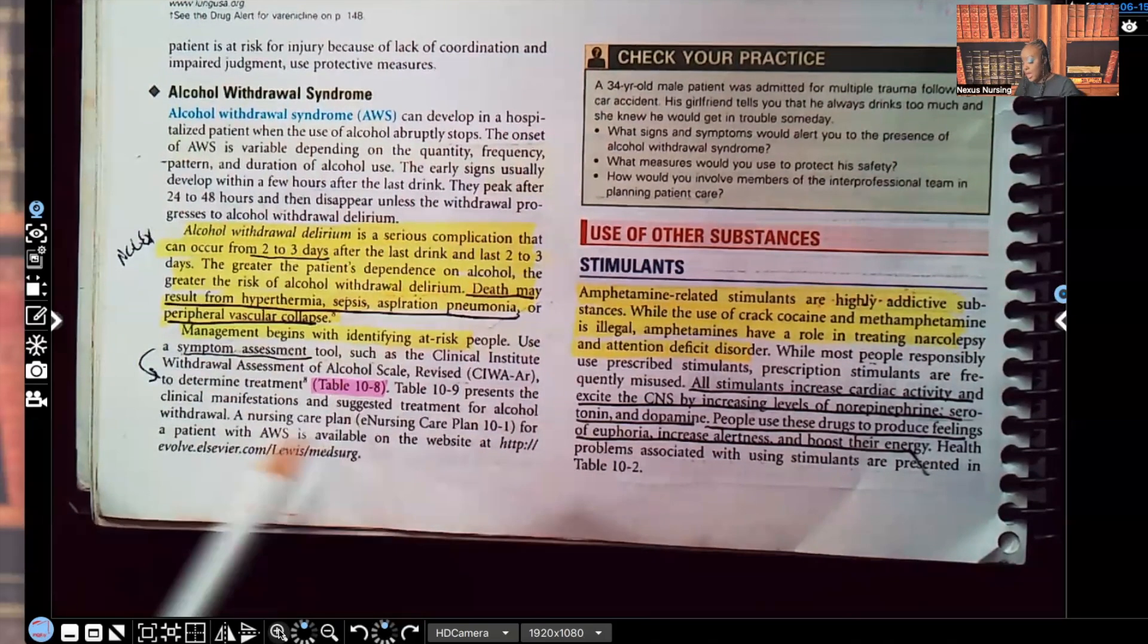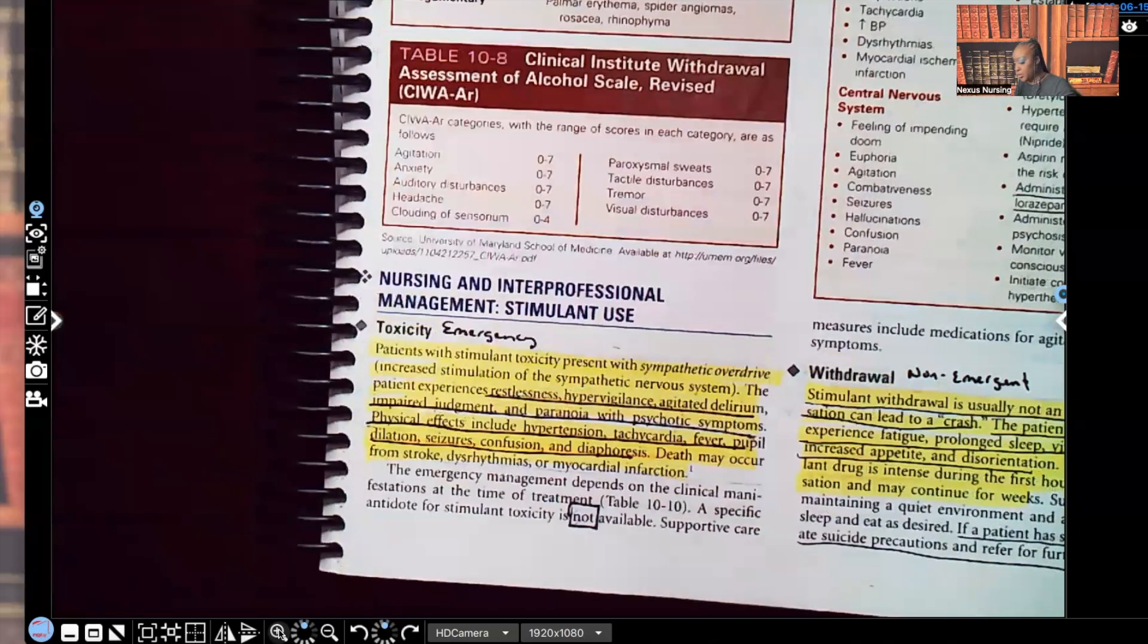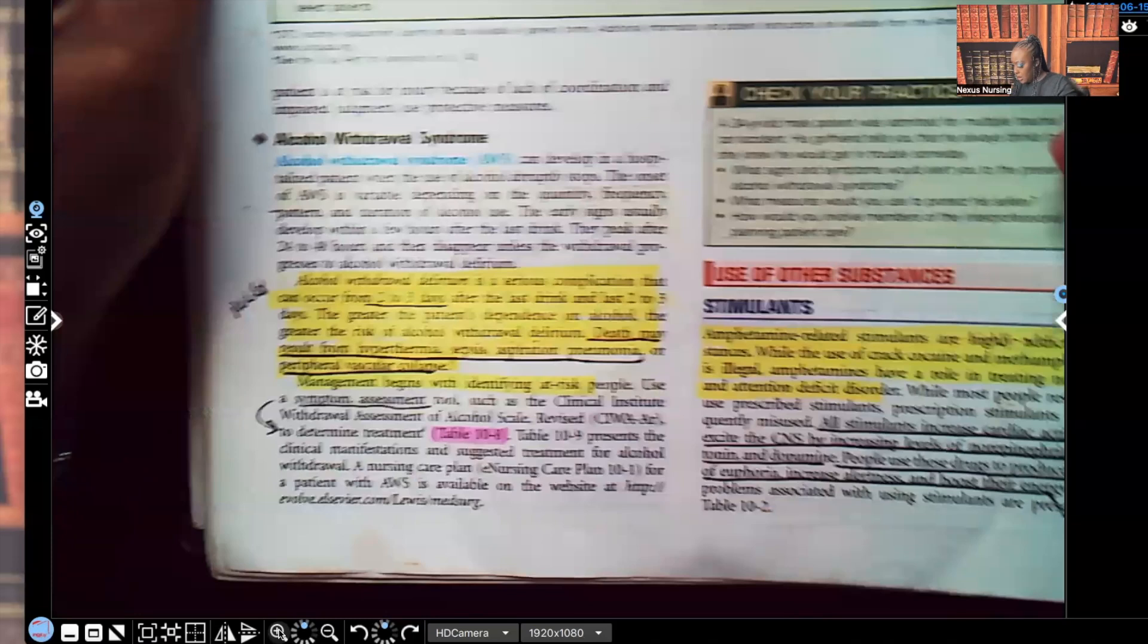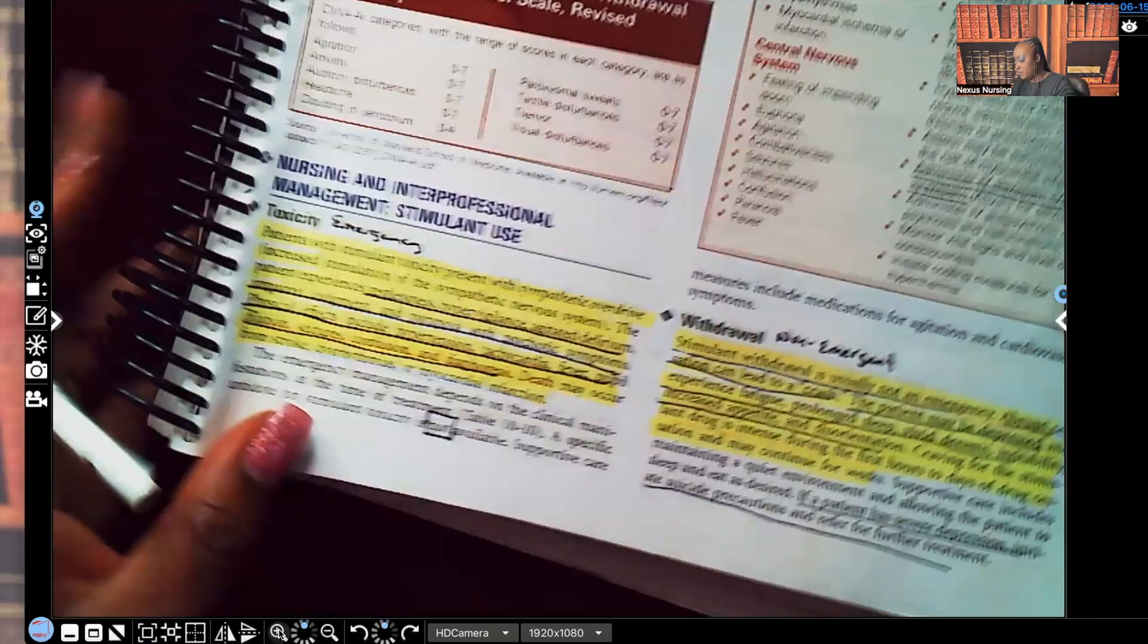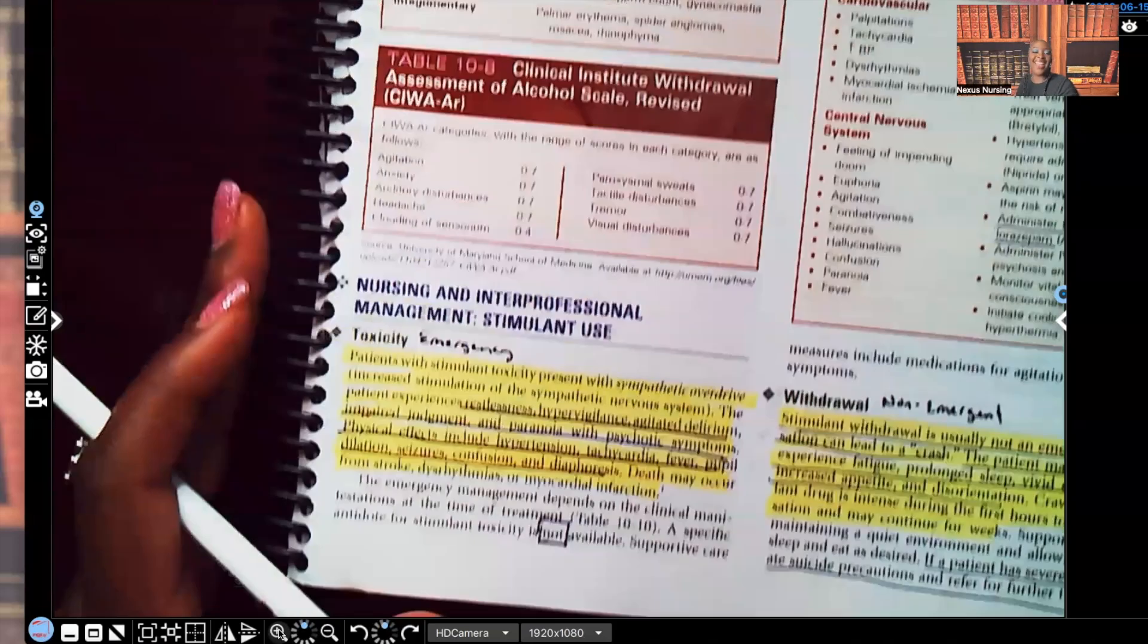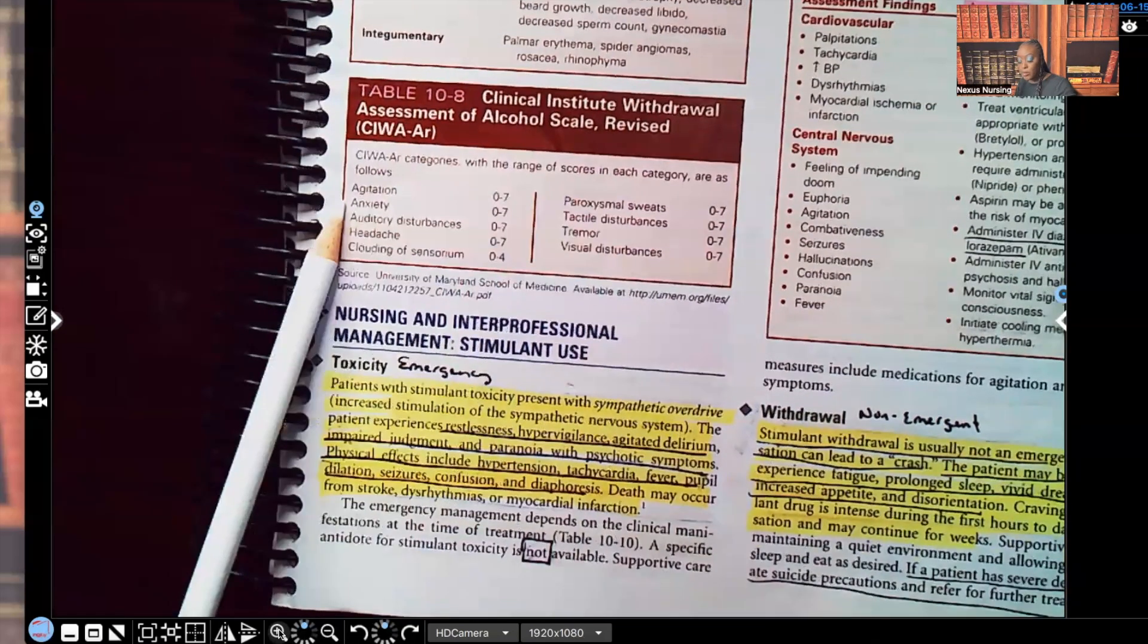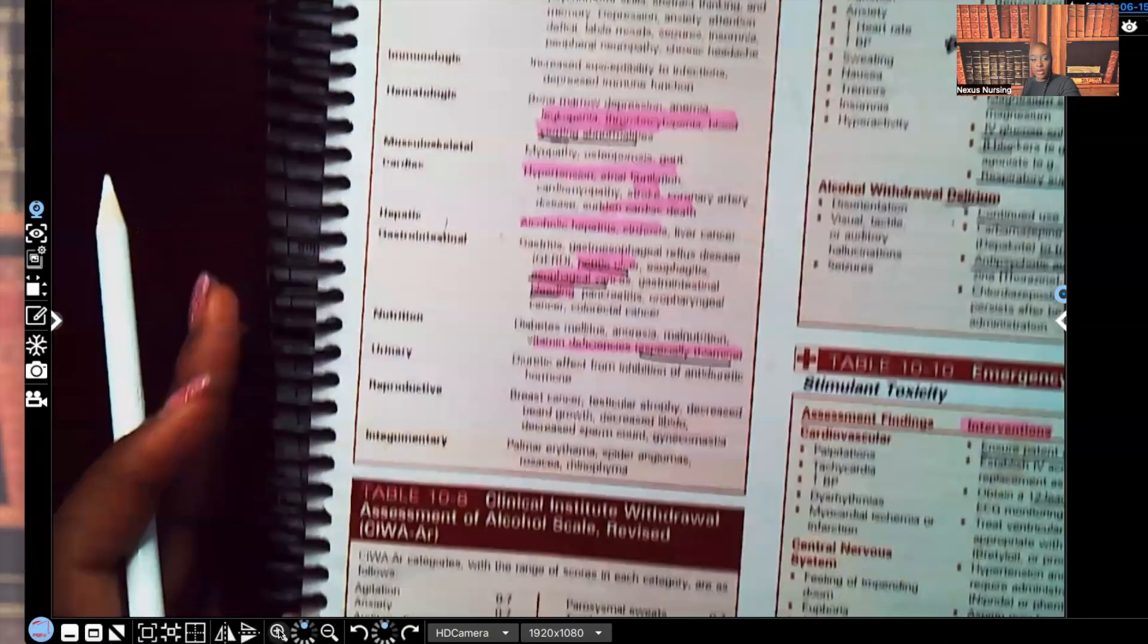Management begins with identifying people who are at risk. So there's a symptom assessment tool. I'll go over that with you right here, right now. Here it is. This is that symptom assessment tool. The clinical institute withdrawal assessment of alcohol scale revised. So look, this is what we're looking for: agitation, anxiety, auditory disturbances, hearing things that are not really there, headache, clouding sensorium, paroxysmal sweats, tactile disturbances, tremor, and visual disturbances.